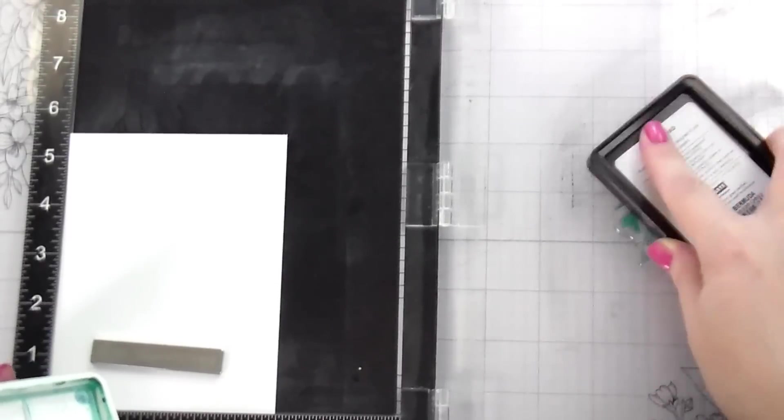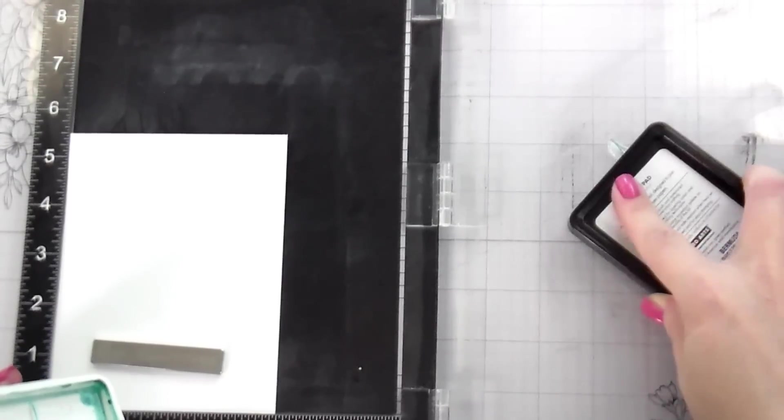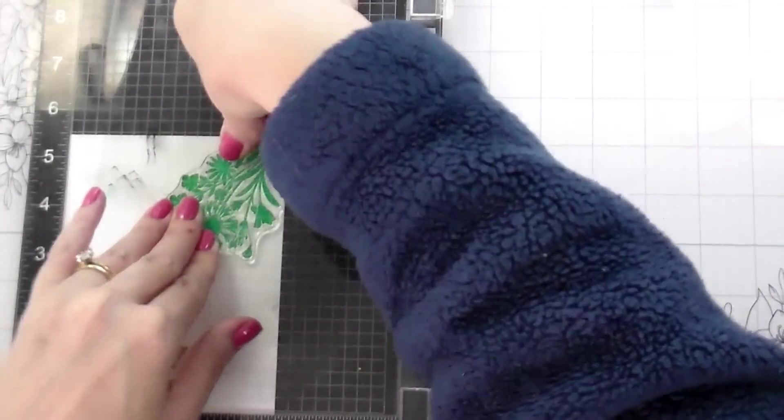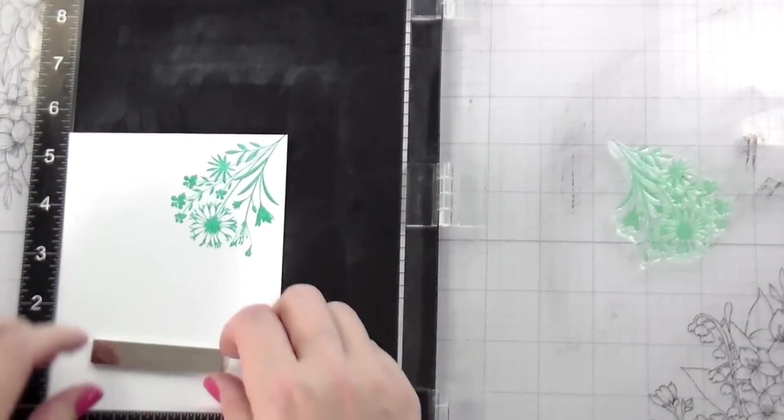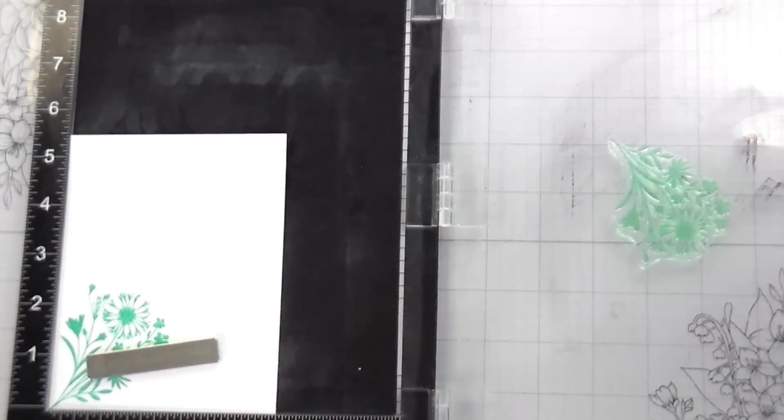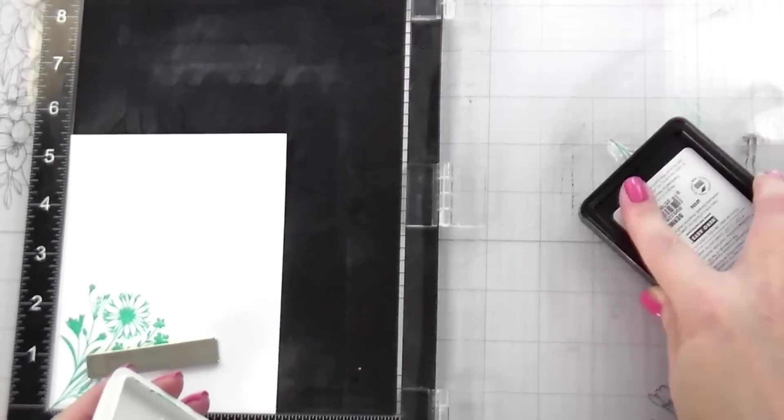You could do whatever color, you know, whatever color that you feel like will make you happy because it's your card. And so I'm going to do the same thing. I'm going to stamp in one corner. I'm going to turn my paper, stamp in the other corner, but you can see this isn't reaching up as far.